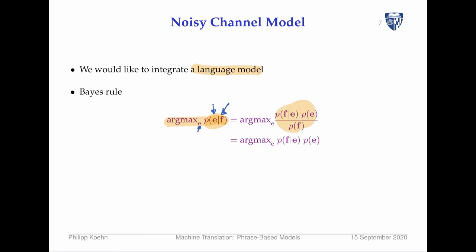That leaves us with two things: apparently still a translation model, except now it goes in the other direction — P(f|e) — and more importantly, here is the language model P(e). This is a convenient way to introduce a language model.